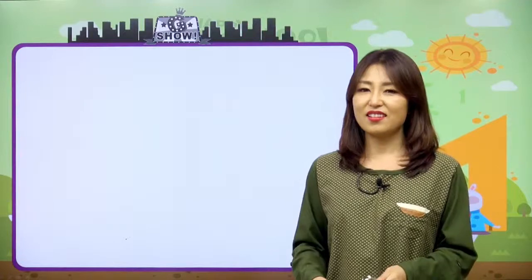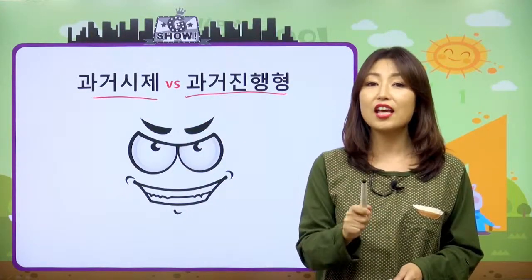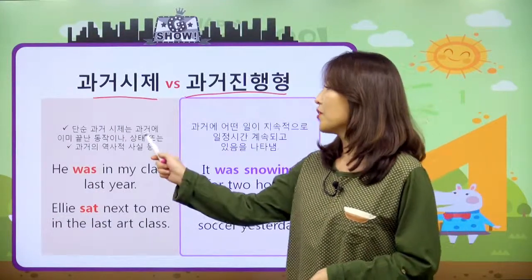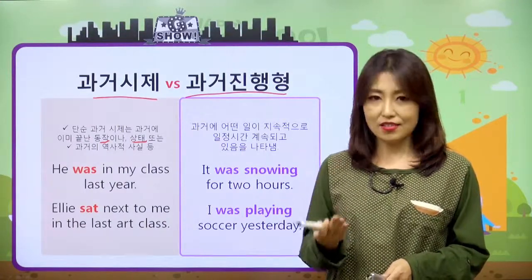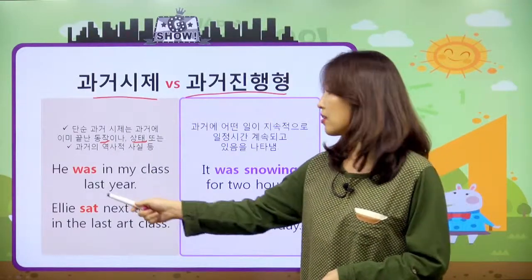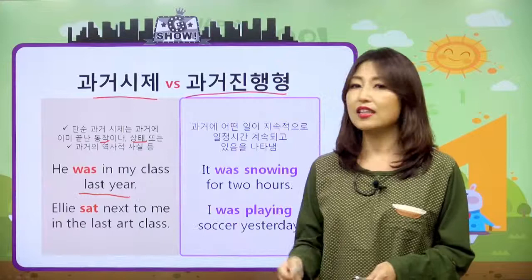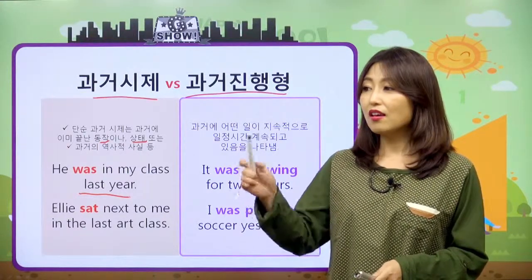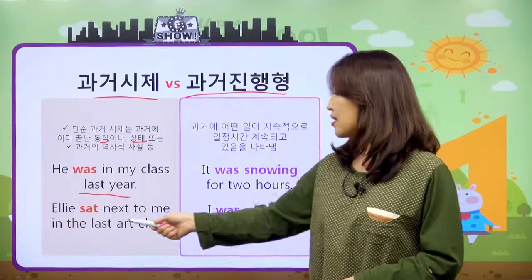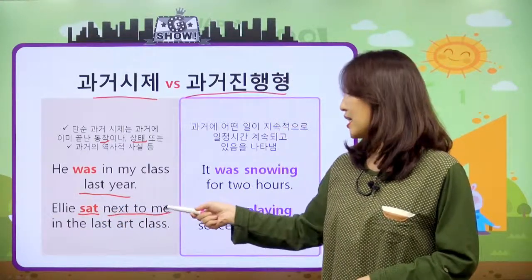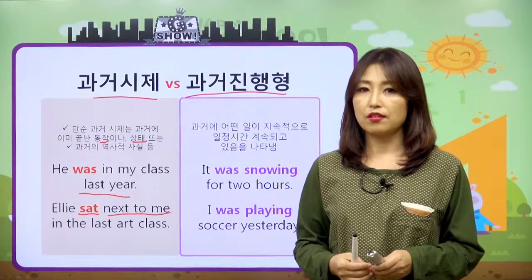이쯤에서 늘 등장하는 의문이 있죠. 과거 시제와 과거 진행형, 단순 과거와 진행 과거를 비교해 볼게요. 단순 과거는 과거에 이미 끝난 동작이나 상태를 말할 때, 그리고 역사적인 사실을 얘기할 때 사용을 했어요. 예를 들어 'He was in my class last year' — 그는 작년에 나와 같은 반이었어, 가 단순 과거죠. 'Ellie sat next to me in the last art class' — 지난 미술 시간에 Ellie가 내 옆에 앉았었어요. 과거에 끝난 동작이에요.